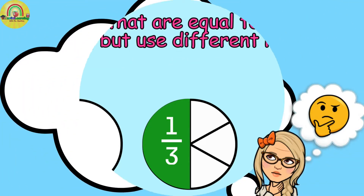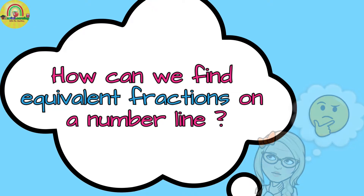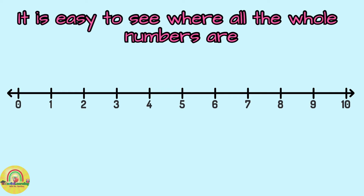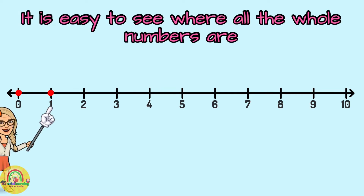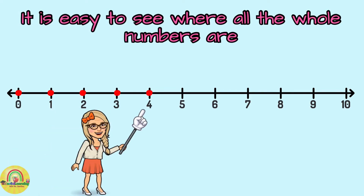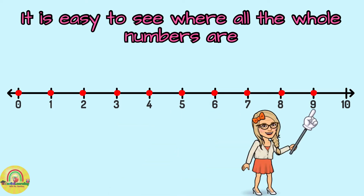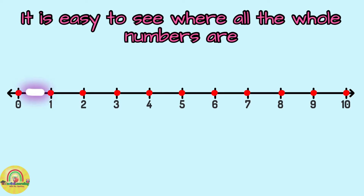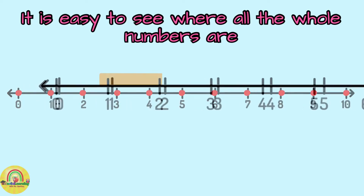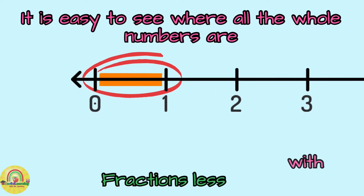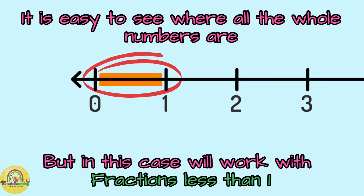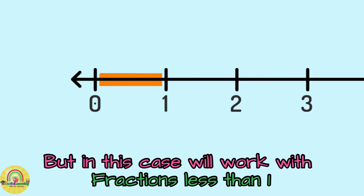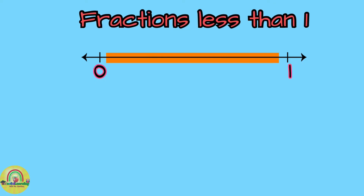Now we're going to see how we apply this using a number line. As you can notice, this is a number line. In this number line, we can easily see the whole numbers — the numbers from zero to ten. But remember that we are working with fractions, and fractions are pieces of a whole. So we're going to use the space between zero and one, because we're going to be working with fractions less than one.